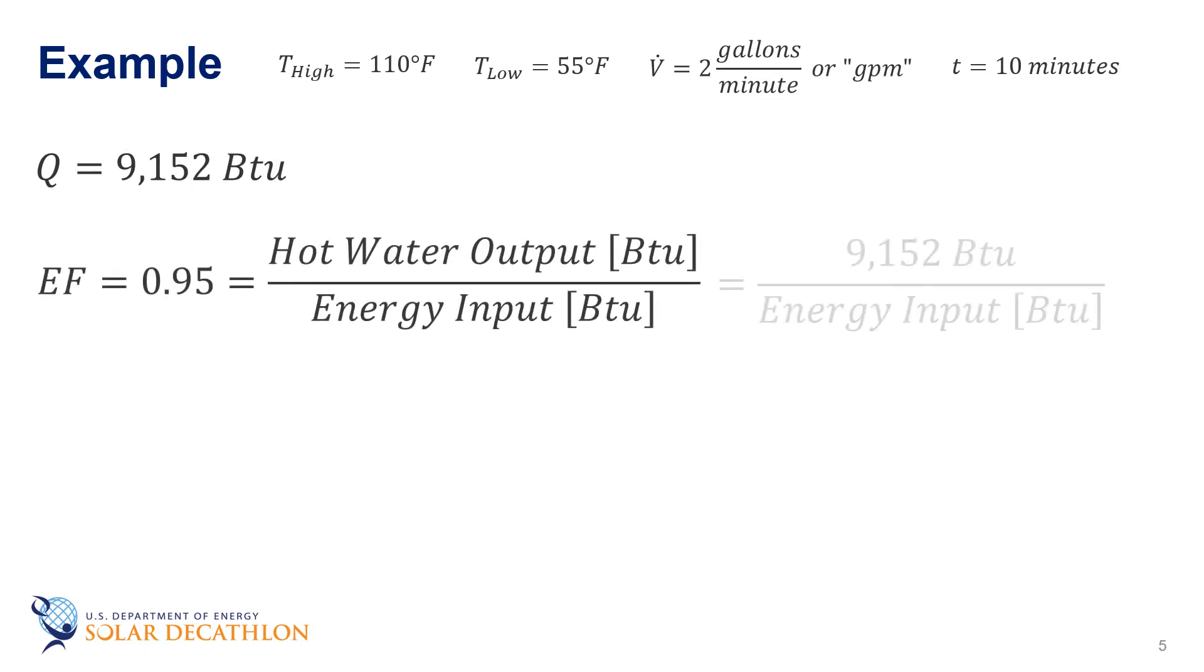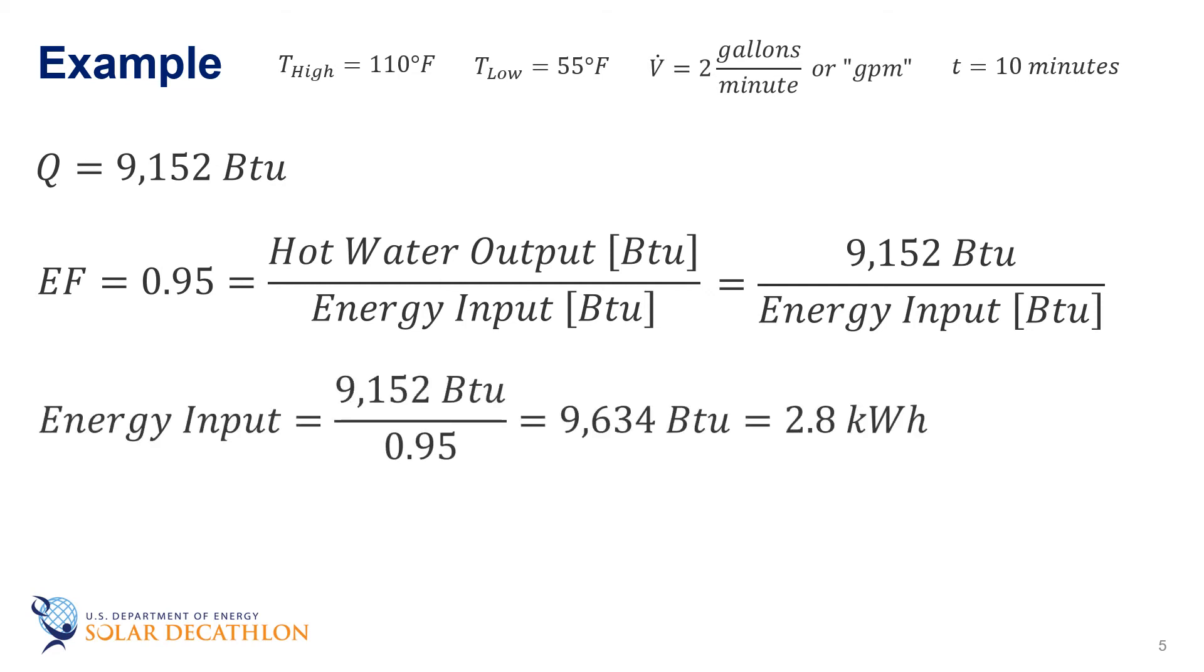If the energy factor of the hot water heater is 0.95, which is typical for an electric resistance unit, then the energy required is 9,634 BTUs or about 2.8 kilowatt hours. If, as an example, electricity is 15 cents a kilowatt hour, then the cost for the shower is about 42 cents.